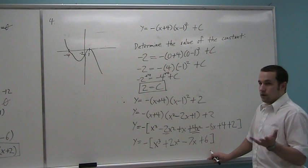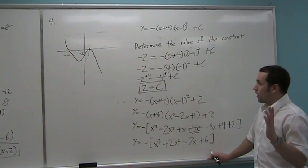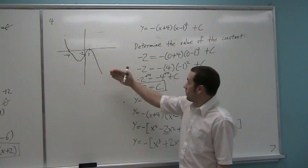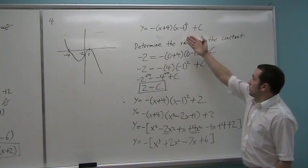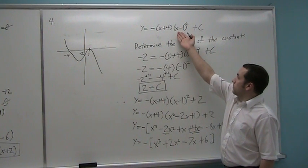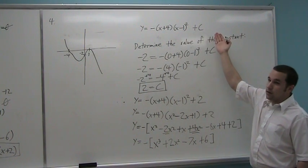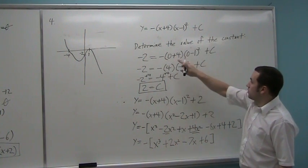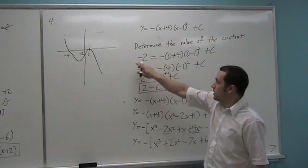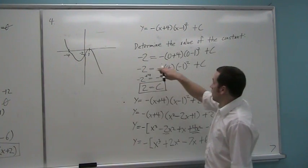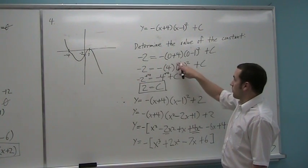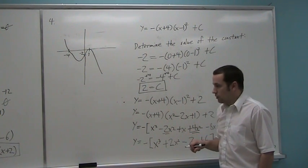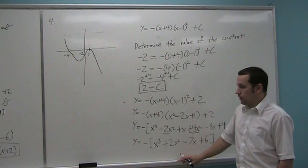4i. To do question 4i, it's the same exact procedure. Take your graph. Write it with your factors here. Put the constant on the end that you have to solve for. Get the constant by saying my y has to be whatever my y intercept is. When I have a y intercept, that means my x is zero. Again, solve for the constant.